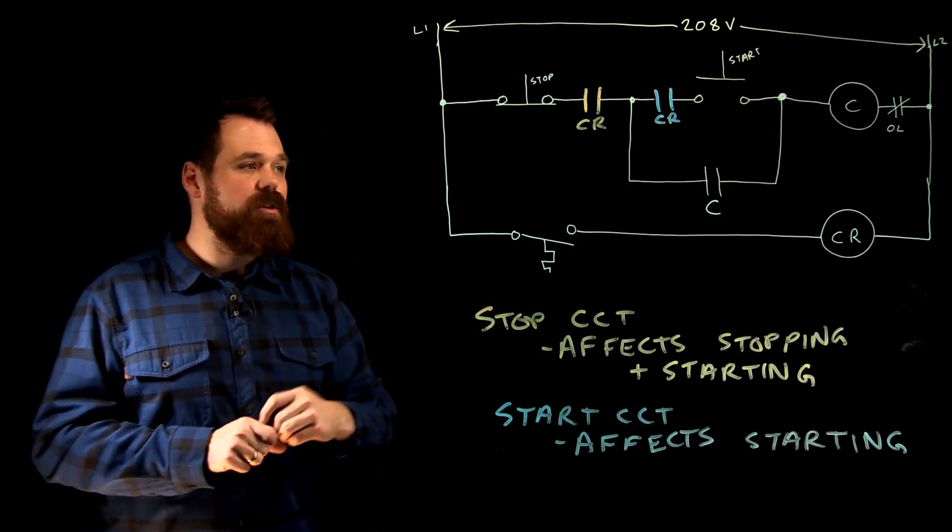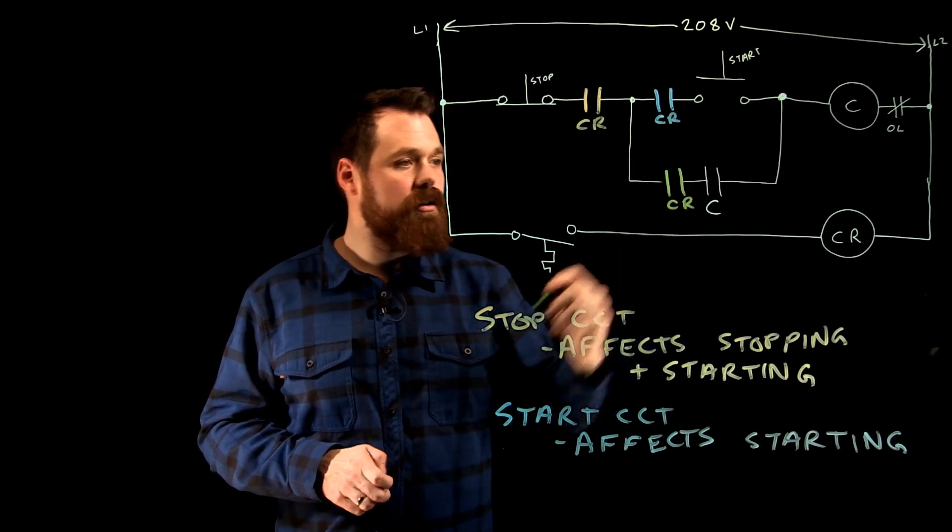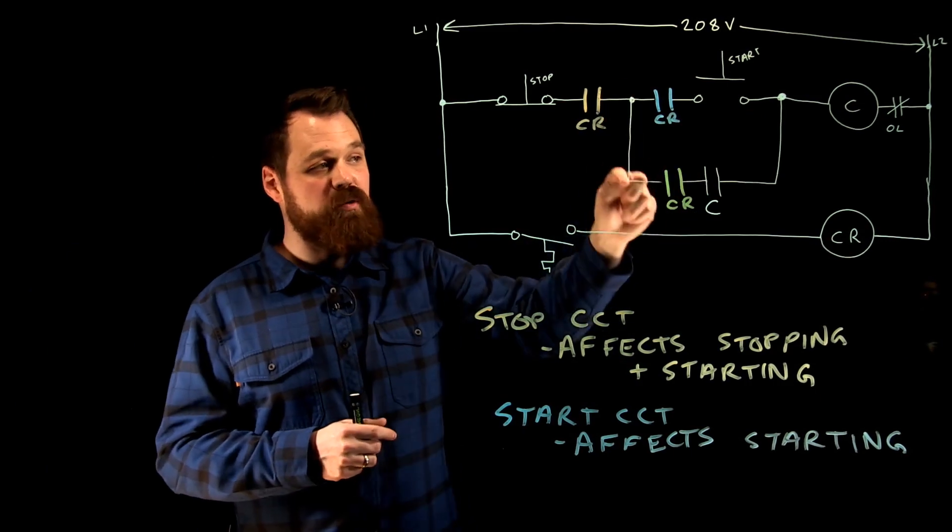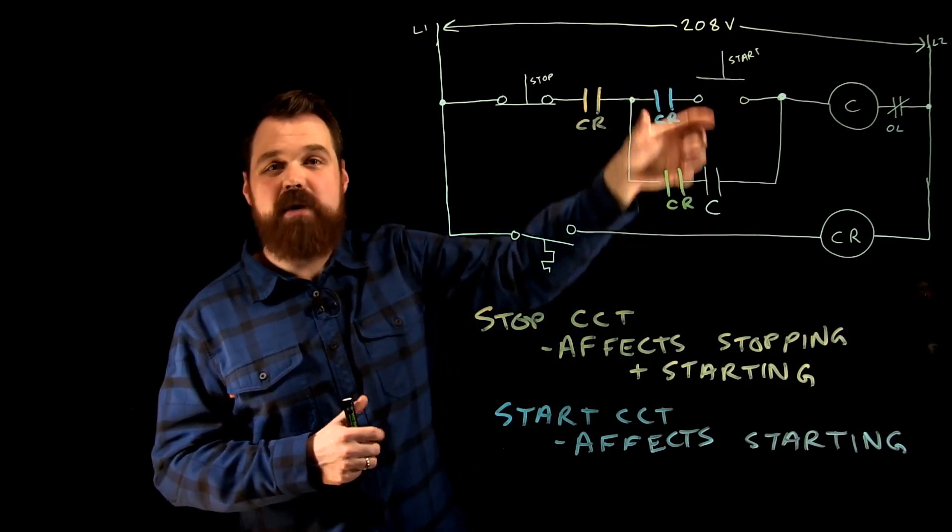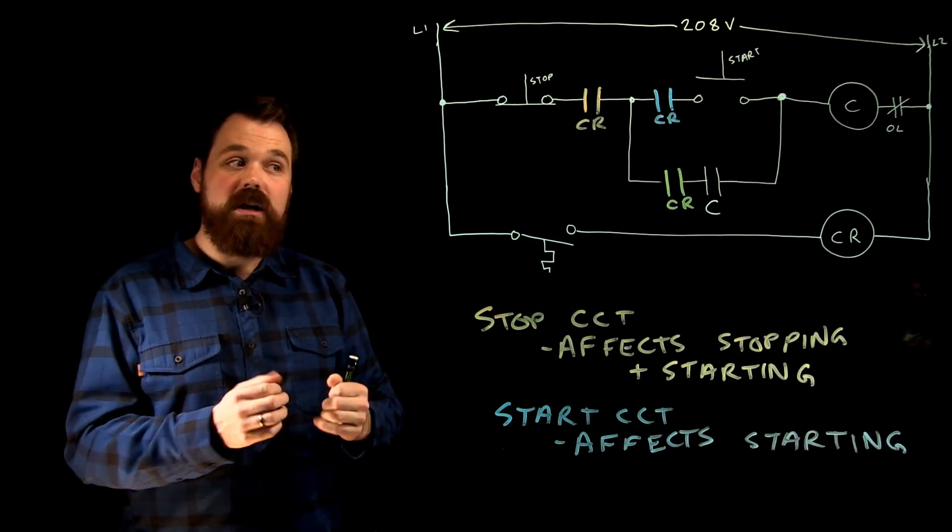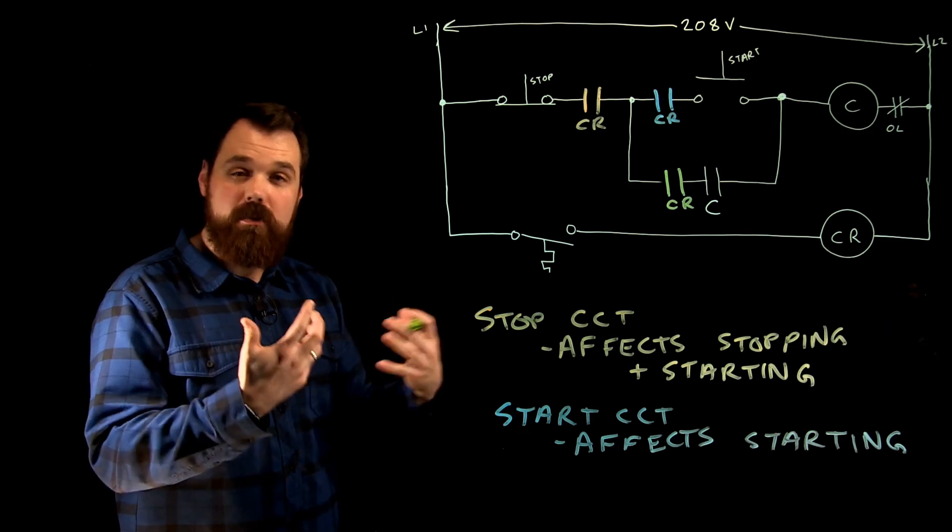The last place we could put a set of contacts would be down here in the holding circuit. So when we put a set of contacts in that holding circuit, between NEMA 2 and NEMA 3 in parallel with our start button, that can be used for a couple different things. If it were to open when the motor is running, it would stop the motor. It would prevent it from running.